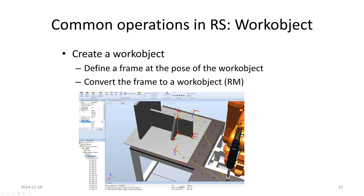A common operation in RobotStudio is to create a work object. We always do that for all programs — to define a frame at the pose of the work object. In this case, it is located at the lower left corner of the bottom plate, which could be seen as the origin of a jig or a fixture or something like that.